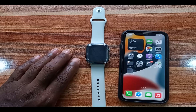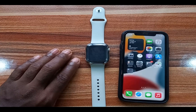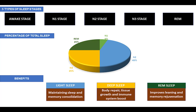According to sleep researchers, there are four stages of sleep: the awake stage, the light sleep stage, the deep sleep stage, and the REM sleep stage. The light sleep stage plays an important role in helping maintain sleep and memory consolidation. The deep sleep stage helps the body undergo repairs, build bones and muscles.